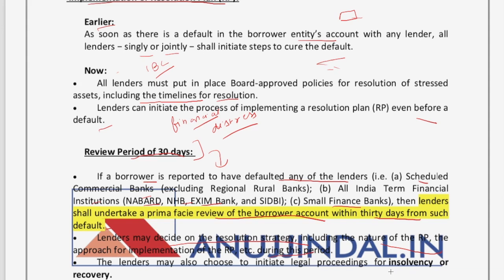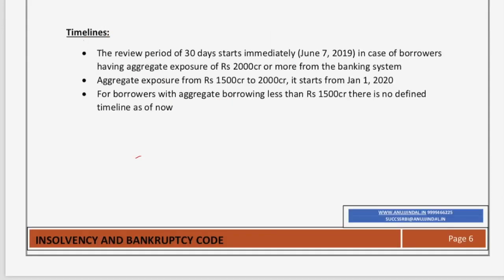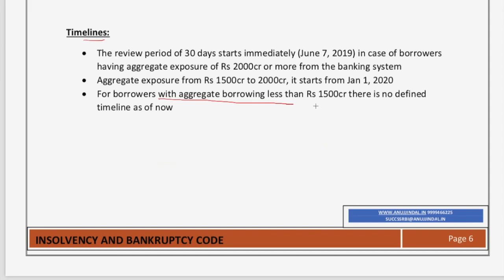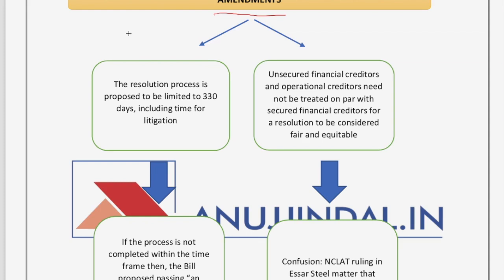The timelines for the review period depend on aggregate exposure: if more than 2000 crore rupees, the 30-day review period starts from June 7, 2019; if between 1500 crores and 2000 crores, from January 1, 2020; and for aggregate exposure less than 1500 crores, there is no defined timeline as of now.